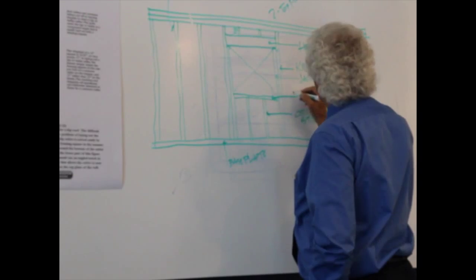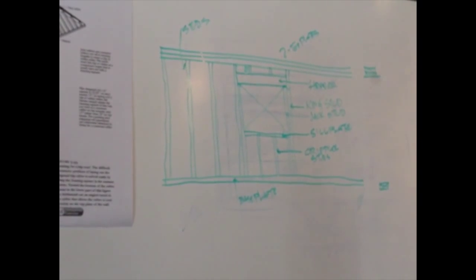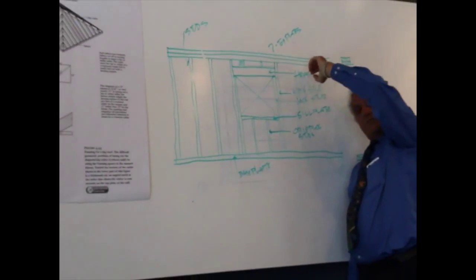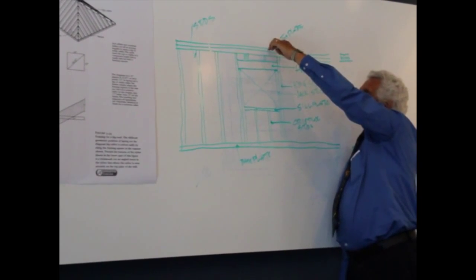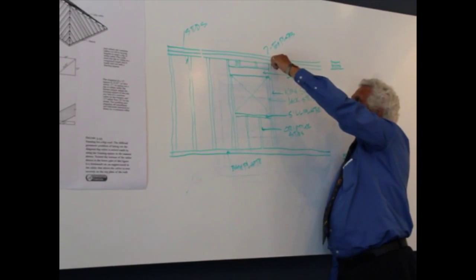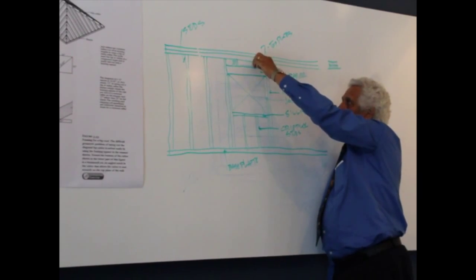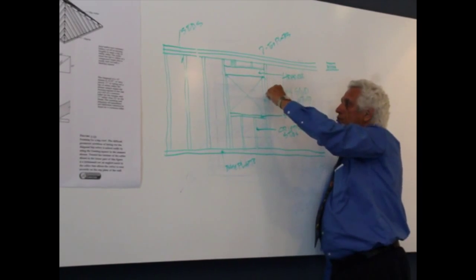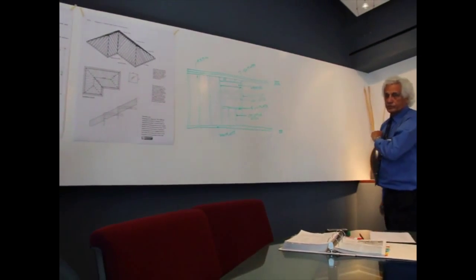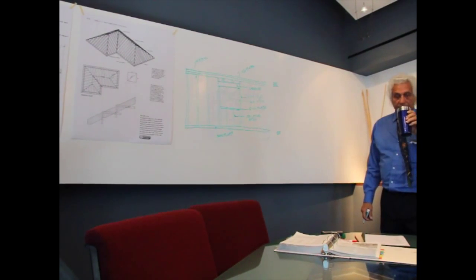The load from above — whether another floor or roof load — is transferred through the double top plates. Over the opening, the load transfers down through the cripple studs into the header, then into the jack studs, which carry the load down into the floor members. That is the standard exterior framing wall assembly.